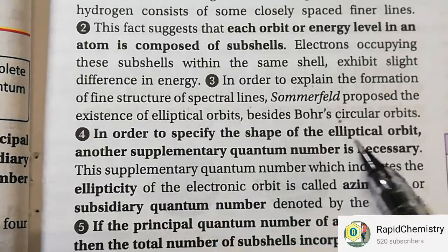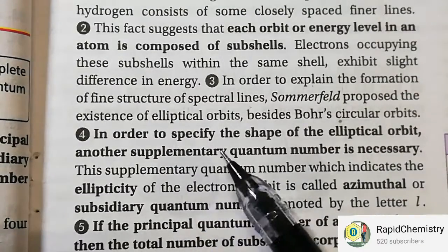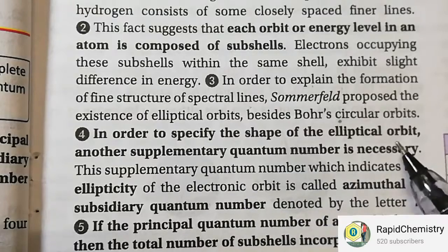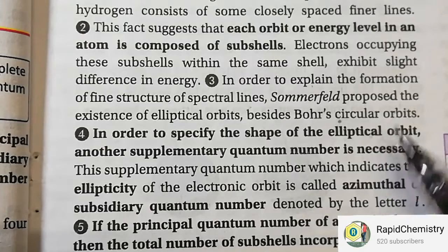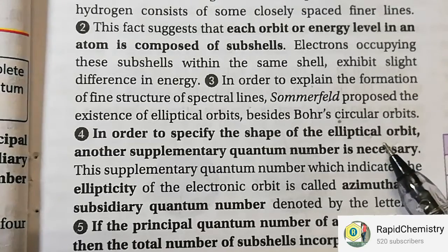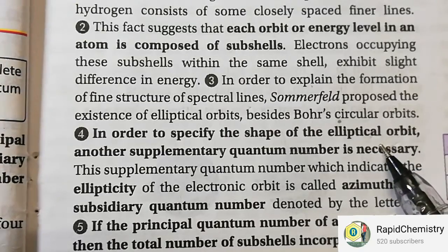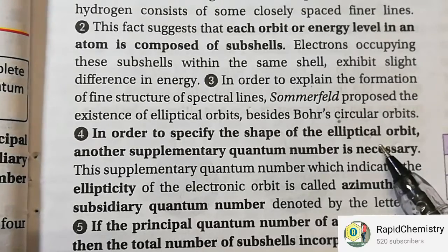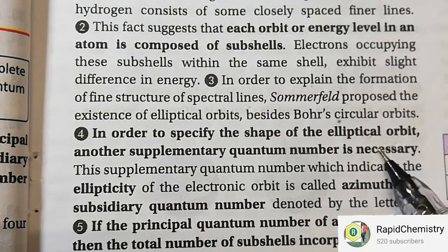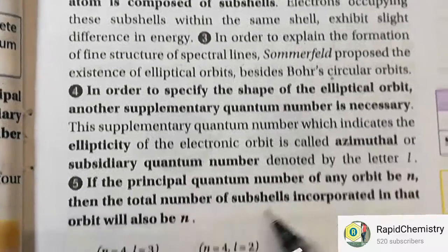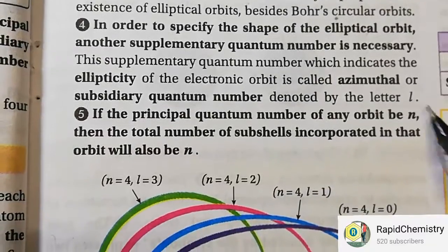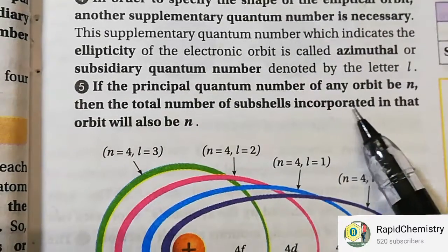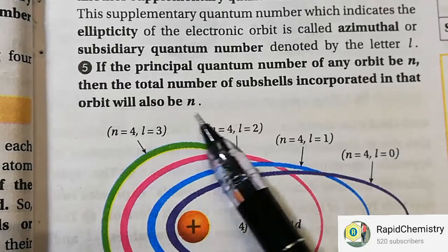In order to specify the shape of the elliptical orbit, another supplementary quantum number is necessary — the azimuthal quantum number. If the principal quantum number of any orbit is N, then the total number of subshells incorporated in that orbit will also be N.